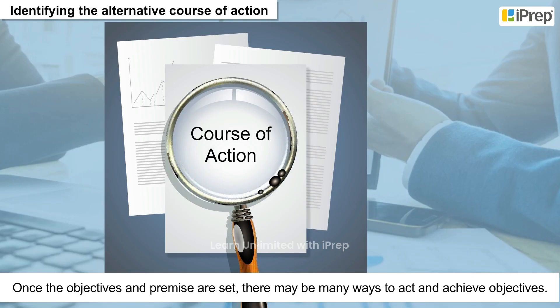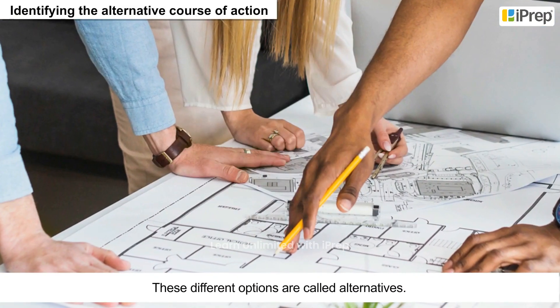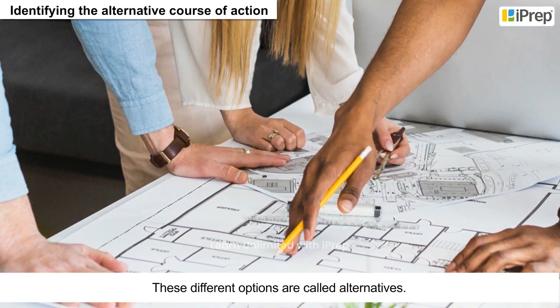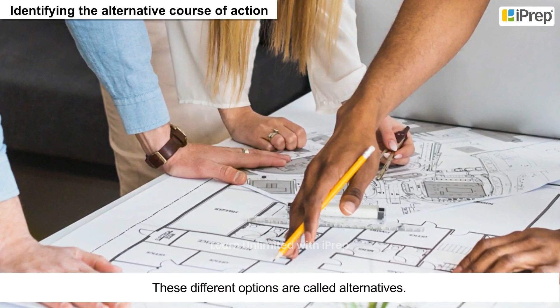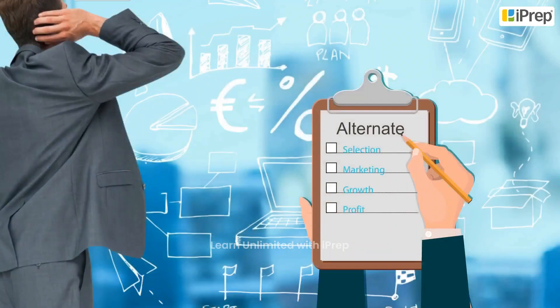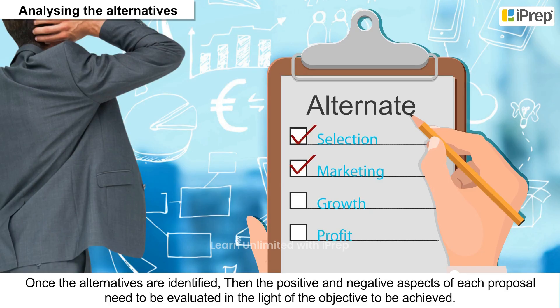Identifying the alternative course of action: Once the objectives and premises are set, there may be many ways to act and achieve objectives. These different options are called alternatives.